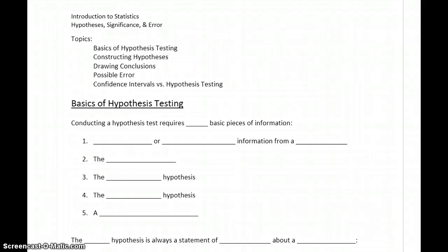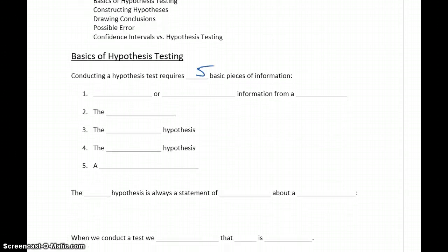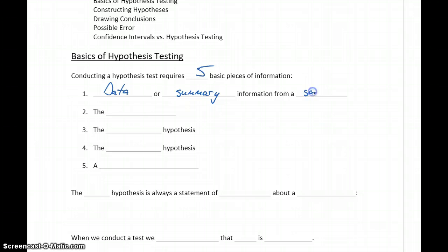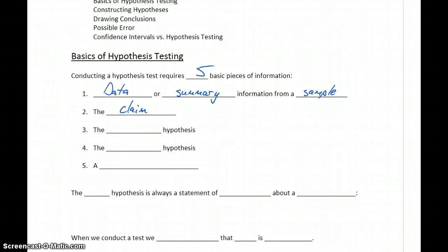Whenever we're conducting a hypothesis test, we need five basic pieces of information. The first thing we need is either the original data that was collected or some summary information, in either case coming from a sample — some smaller subset of our population. We also need a claim. Based off some data, we're going to make a claim about a population proportion or about a population mean.